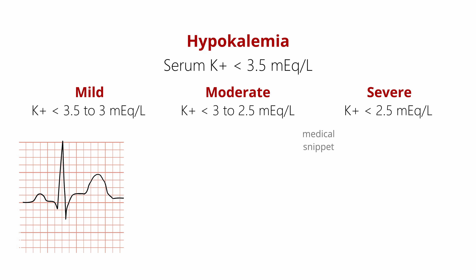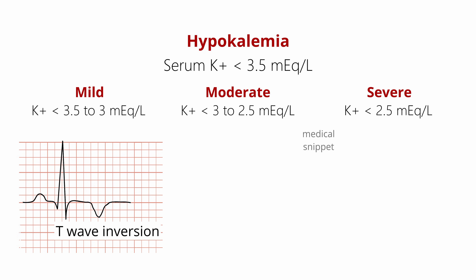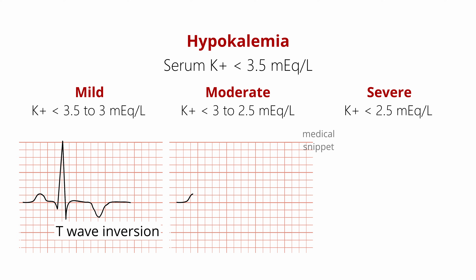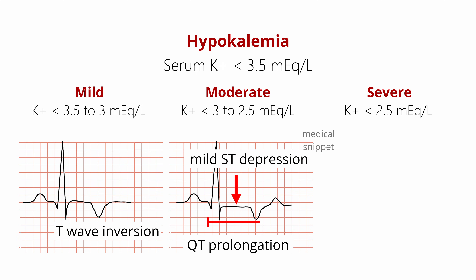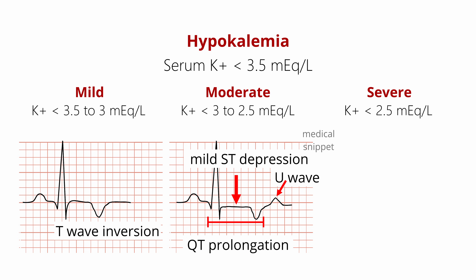The first ECG change in mild hypokalemia is flattening of T-wave or T-wave inversion. Moderate hypokalemia causes mild ST depression, QT prolongation, visible U-wave, and ventricular extrasystoles. It should be noted that U-waves are often best seen in the mid-precordial leads, i.e., V2, V3, and V4.